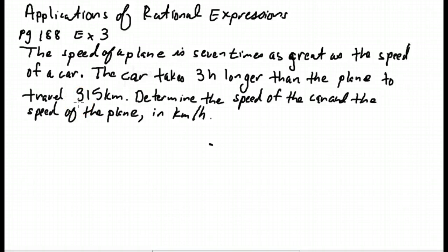The speed of a plane is seven times as great as the speed of a car. The car takes three hours longer than the plane to travel 315 kilometers. Determine the speed of the car and the speed of the plane in kilometers per hour. This is a distance speed time question. We should know that distance is equal to speed times time. If I'm going 100 kilometers an hour and I'm spending three hours driving to Edmonton, 100 times 3 gives me 300 kilometers, which is the distance to Edmonton.